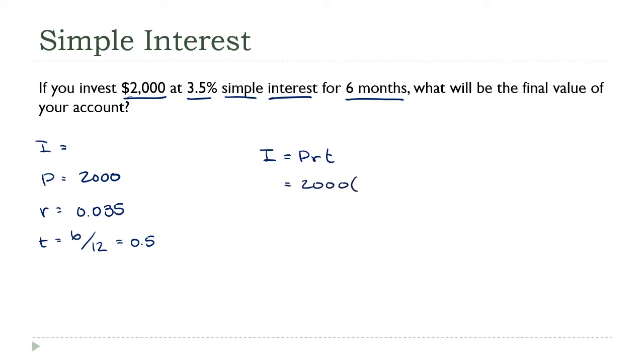2,000 times 0.035 times 0.5, which is 1,000 times 0.035. That is 35. So again, I'll state the answer. You earn $35 in interest.